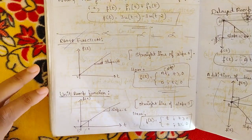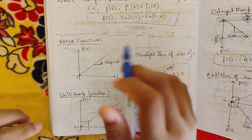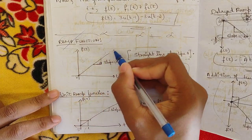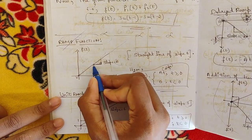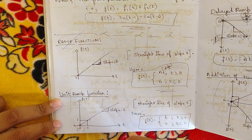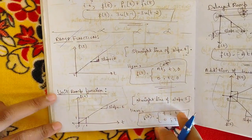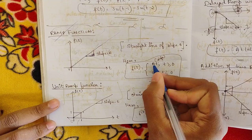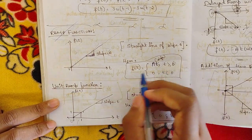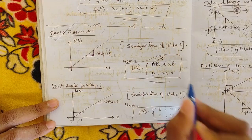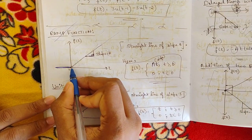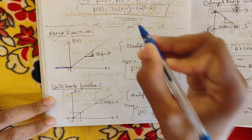Let us see what is the ramp function. This is the graph of a ramp function — an f(t) versus t graph. From zero, this straight line is basically a ramp. The slope is equal to 'a', so a straight line of slope 'a' is represented as a ramp function. Mathematically, f(t) = a·t for t ≥ 0, and f(t) = 0 for t < 0.